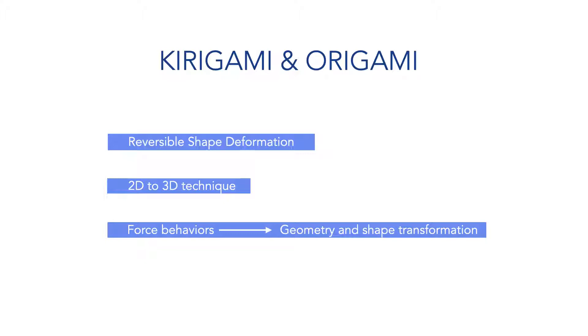For Kirigami and Origami structure, apart from the commonly known properties like reversible shape deformation and enabling 3D structures made from 2D sheets, another interesting point is the force behaviors of the structure caused by the geometry and shape transformation. Those three points make this technique as a good solution to our research goals.